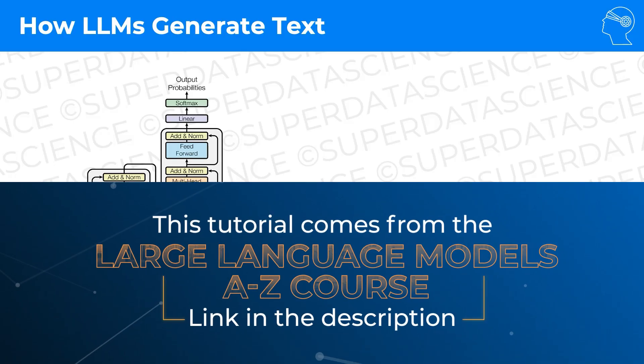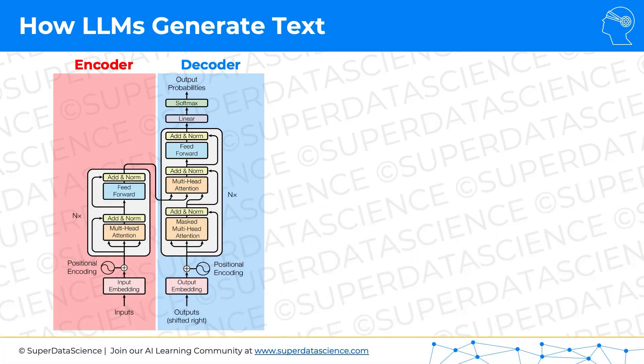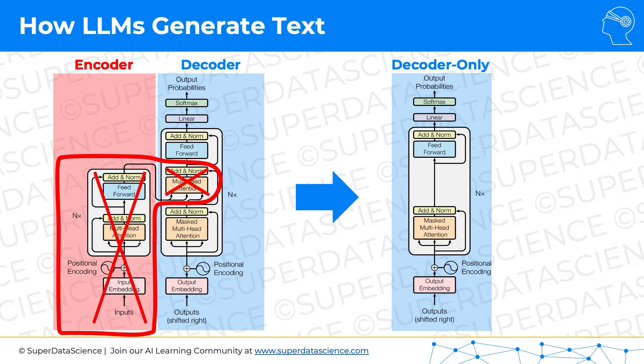All right, so here we have the transformer model. As we discussed, it's got the encoder and decoder part. And interestingly enough, we're going to actually simplify this for large language models. We don't need the full transformer, and this is a very important component of this whole course and in the understanding of large language models — large language models, including ChatGPT, don't actually use the whole transformer. They don't use the encoder part. So these elements of the transformer we can just remove them, throw them out, and we will get this decoder-only model.